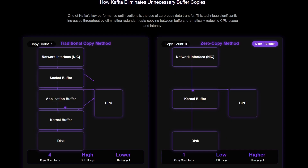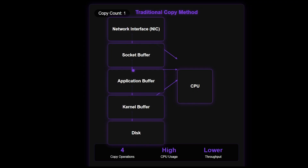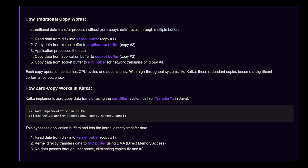The second optimization is zero copy. In traditional data transfer, when a message goes from disk to a network socket, it goes through four steps: the OS reads data from disk into the kernel buffer; the data is copied from kernel space to application memory; the application then copies it back to kernel space as the network buffer; and finally it is sent over the network. That's four copies for a single transfer, which wastes CPU cycles and memory bandwidth. With zero copy optimization, Kafka uses specialized system calls that allow data to move directly from disk to network without all those extra copies, resulting in much less CPU usage, lower memory overhead, and significantly higher throughput — especially for larger messages. Kafka uses the sendfile system call to make this zero copy data transfer.